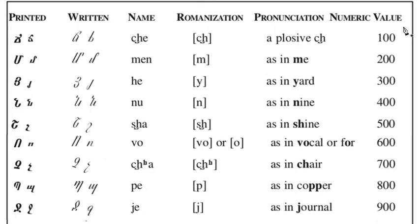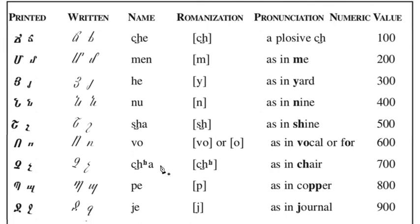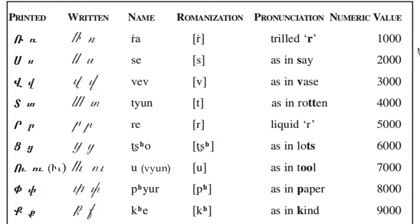Next we have the hundreds: ZE, MEN – M, HA – Y, JNO – N, KA – SH, VOW – VOW, CHA – CH, BE – P, DZE – ZE, RA – R, SE – S.